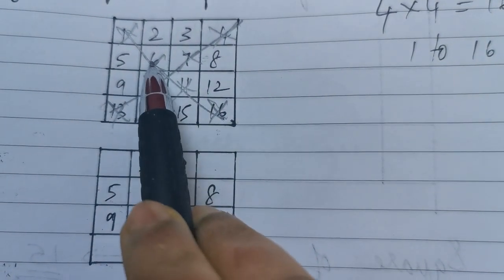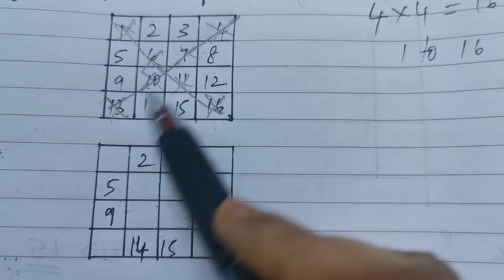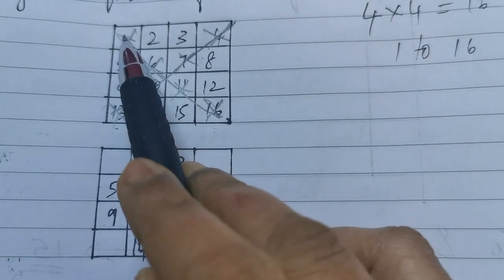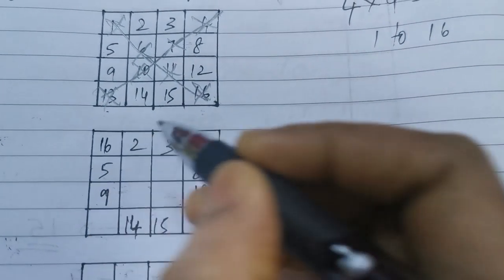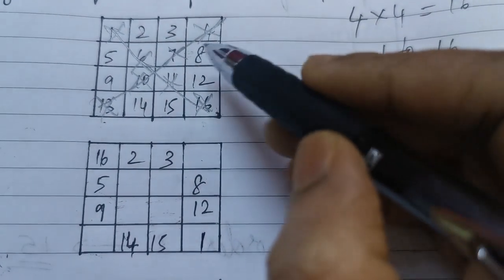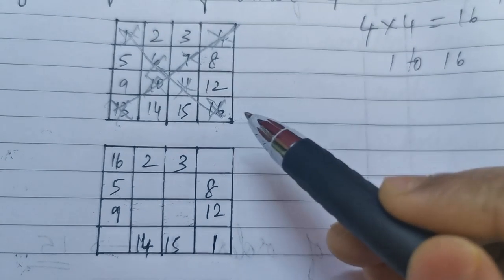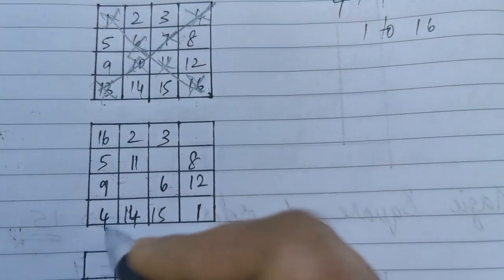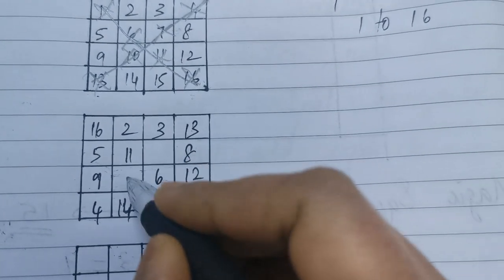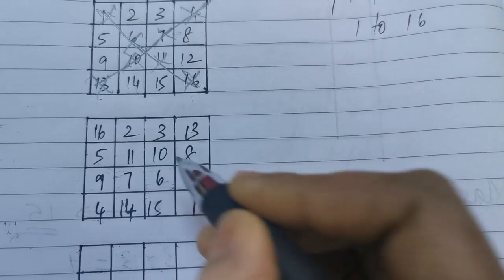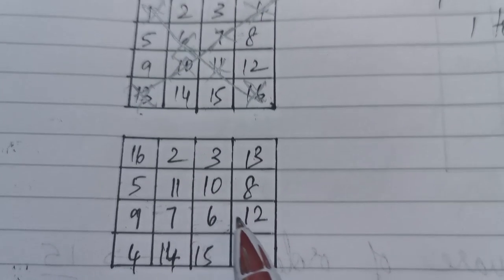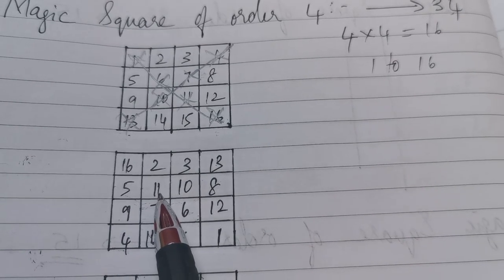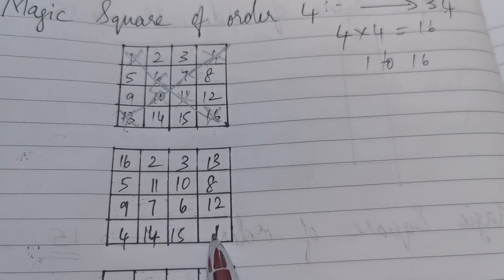16 and 1 exchange their places, and 11 and 6 exchange their places. Coming to the other diagonal, 4 and 13 exchange their places, and 7 and 10 exchange their places. So instead of 1, I will have 16 in its place. Instead of 6, I will have 11. 4 and 13 swap, and 7 and 10 swap. So here I will have 7 and here I will have 10. Now if I add horizontally, vertically or diagonally, my sum will be 34. Let's verify: 16 plus 11 is 27, plus 6 is 33, plus 1 is 34.